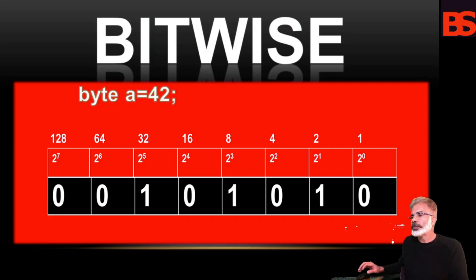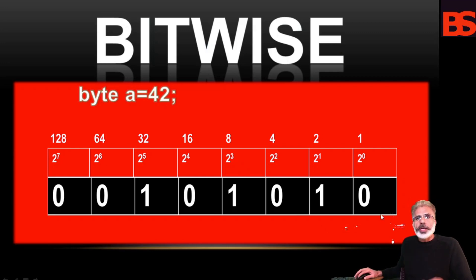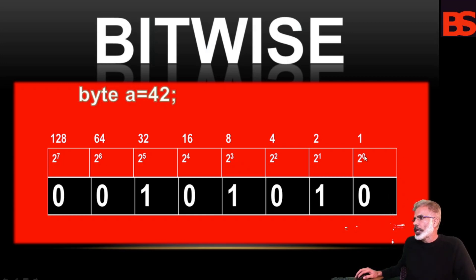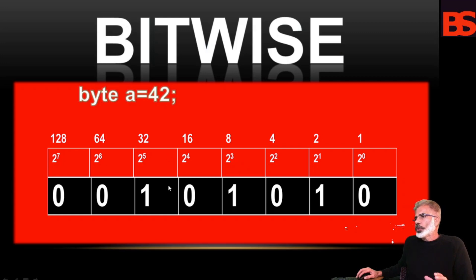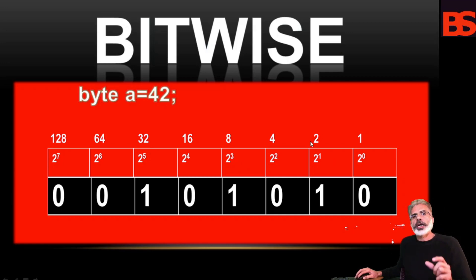For example, the byte value of 42 has a bit pattern of 00101010, where each position represents a power of 2 starting with 2^0 at the rightmost, then 2^1, 2^2, 2^3, and so on. So 42 is the sum of 2^5, 2^3, and 2^1 — that is, 32 plus 8 plus 2 equals 42.